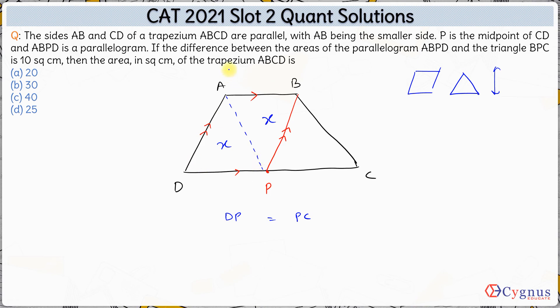Area of a parallelogram is base times height. Area of a triangle is half base times height. So for this triangle and for this parallelogram, base is same, DP and PC. P is the midpoint. And height is also the same. This is the height. That means area of this triangle will be half the area of the parallelogram.